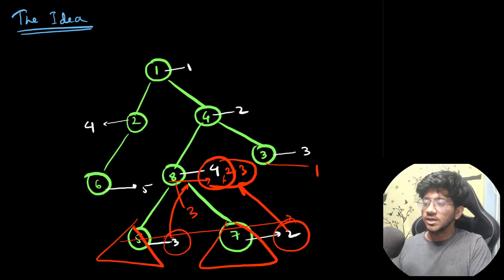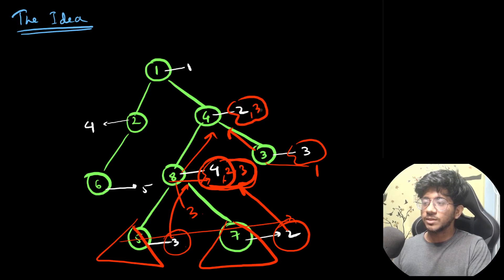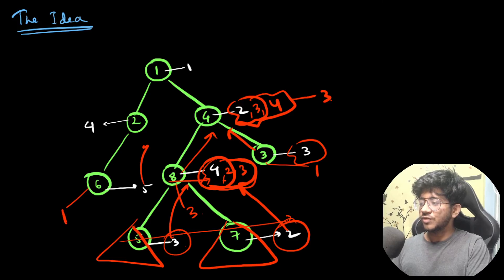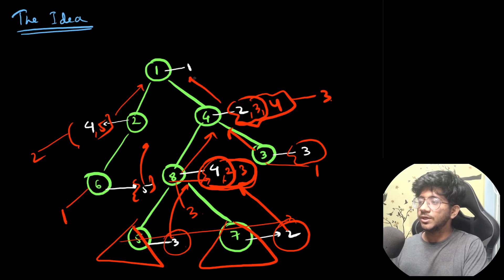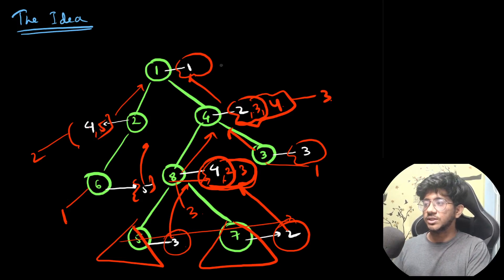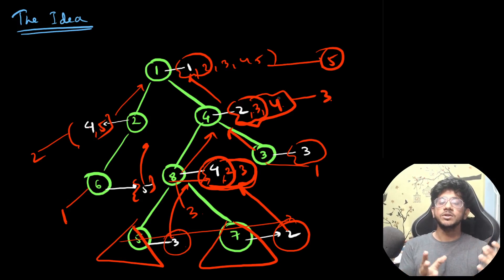The answer for a node is then the size of its merged set. You push sets upward: a node's own value {2} merges with a child set {3} and a larger merged set {2, 3, 4} coming from below, resulting in {2, 3, 4} — so the answer is three. Similarly, another subtree contributes {4, 5}, giving an answer of two. Everything eventually gets merged into {1, 2, 3, 4, 5} at the root, giving an answer of five. The main idea is pushing things up and merging sets together.